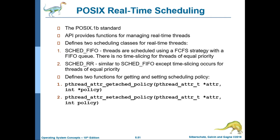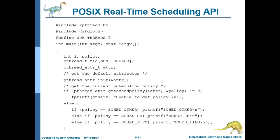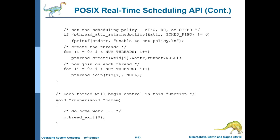POSIX real-time scheduling (POSIX.1b standard) provides API functions for managing real-time threads. It defines two scheduling classes: SCHED_FIFO (threads scheduled using FCFS strategy with no time slicing for threads of equal priority) and SCHED_RR (similar to SCHED_FIFO except time slicing occurs for threads of equal priority). Two functions are defined for getting and setting scheduling policy: pthread_getschedparam and pthread_setschedparam.